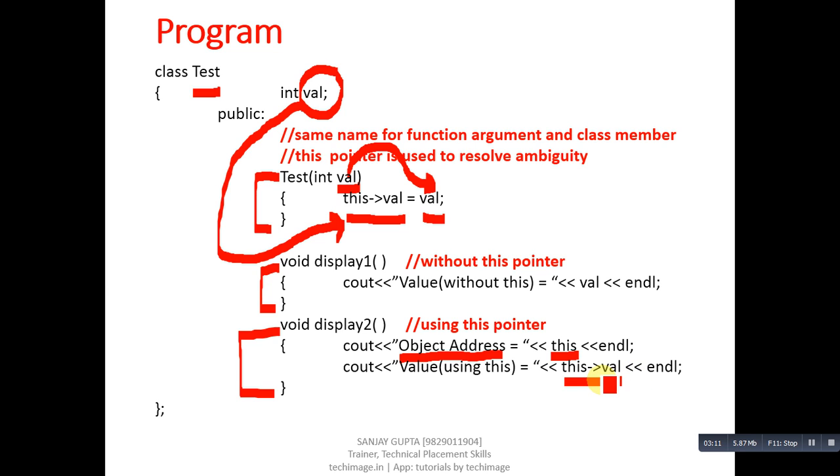So friends, there are two uses of 'this'. First, if you want to access all the class members so that you can uniquely represent them with other variables, you can use 'this'. Or second use is if you want to access the address of the object through which a function is called, then also you can use this pointer.